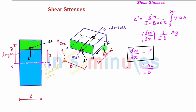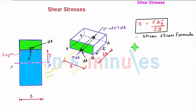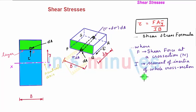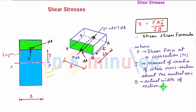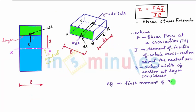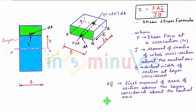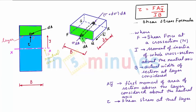Since the complementary shear stress tau dash is the same as the vertical shear stress on the transverse cross-section, we simply write: shear stress tau = F·A·ȳ / (I·b). Here, F is the shear force at the cross-section in Newtons; I is the moment of inertia of the whole cross-section about the neutral axis; b is the actual width of the section at the layer considered; and A·ȳ is the first moment of area of the section above the layer considered about the neutral axis. This shear stress tau could be a vertical/transverse shear stress on the transverse section, or the horizontal complementary shear stress on a plane through that layer. The unit of shear stress will be N/mm² if width and moment of inertia are in mm and mm⁴ respectively.